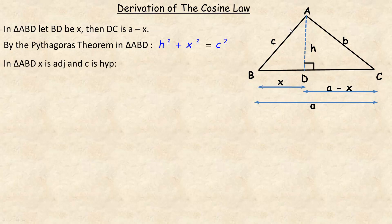In this triangle, ABD, X in relation to the B angle is the adjacent side, and C would be the hypotenuse. So in relation to angle B here, the cosine of angle B would be X over C. Now, if we cross-multiply to solve for X, X would equal the product of C and cos B.